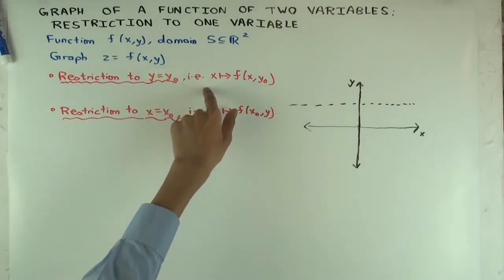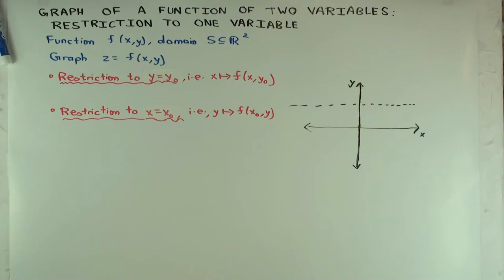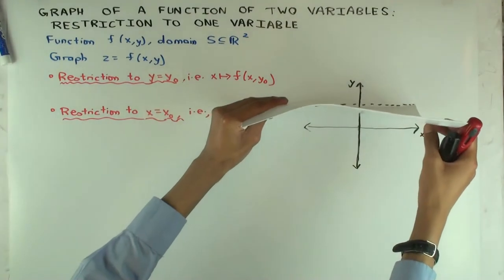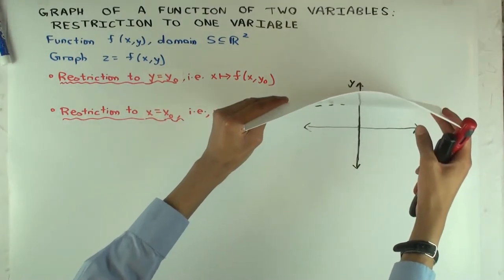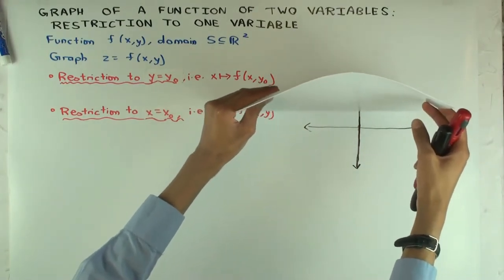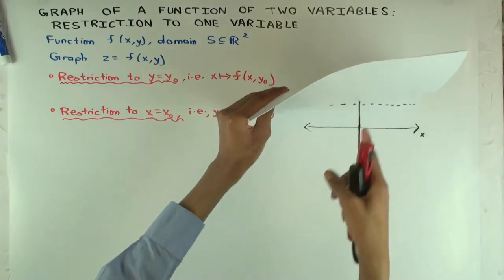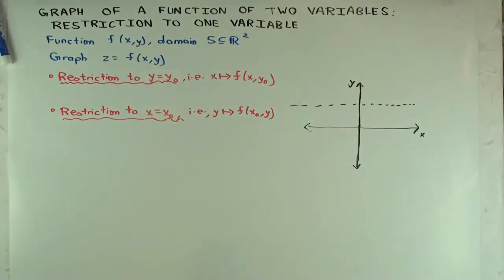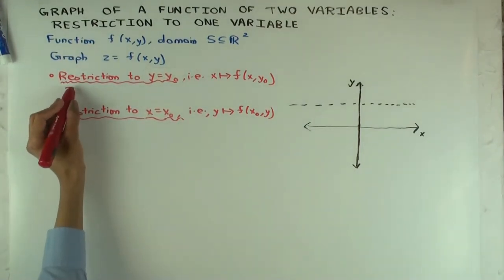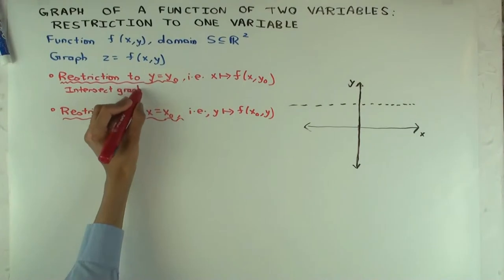What should we do? We should intersect that graph with the plane y equals y0. So there'll be a plane like this — y equals y0. In three dimensions, y equals y0 is actually a plane with one axis along y equals y0 parallel to the x-axis and the other axis parallel to the z-axis. So it's a plane parallel to the xz-plane. Intersect the graph with the plane y equals y0, which is parallel to the x-axis.